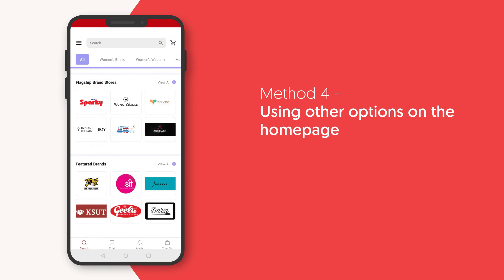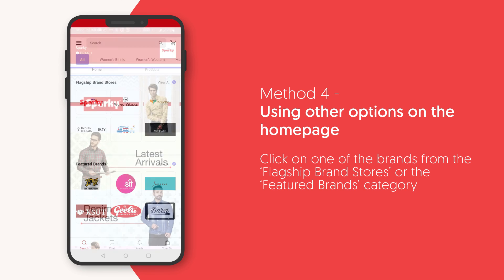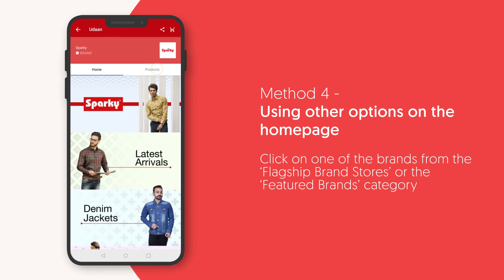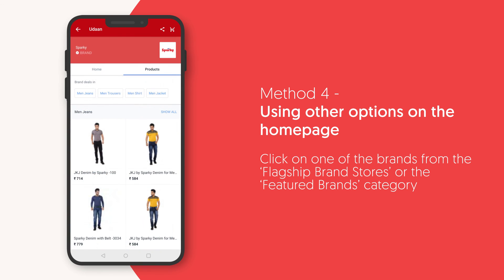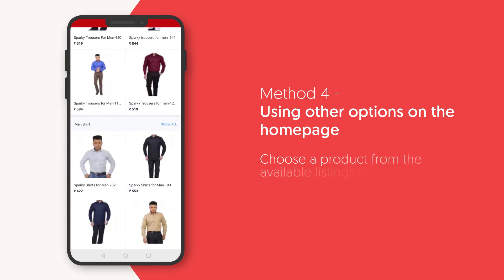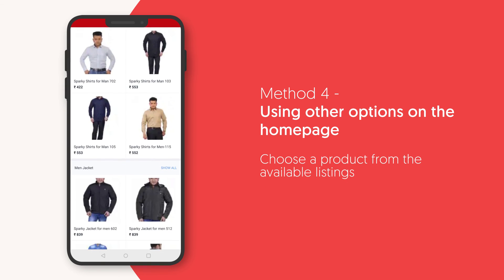Method 4: Using other options on the home page. Brands sell directly on Udaan and their listings are available on the home page. If you wish to browse for a product from a specific brand of your choice, click on one of the brands available in the flagship brand stores or the featured brands category. This will take you to the brand's page and you can choose a product from the available listings.